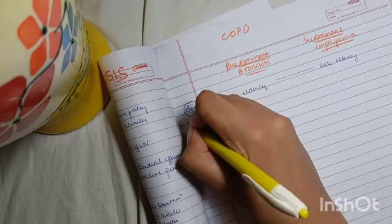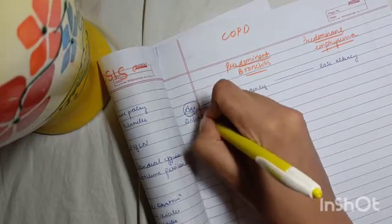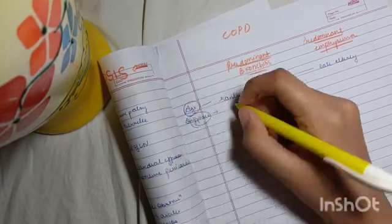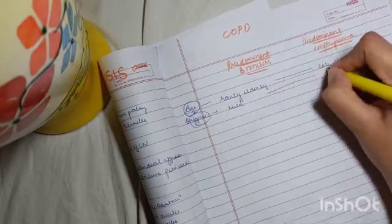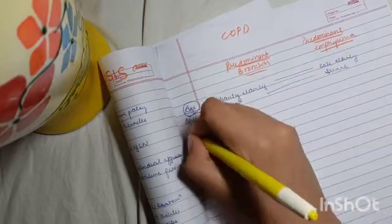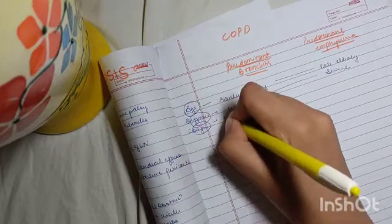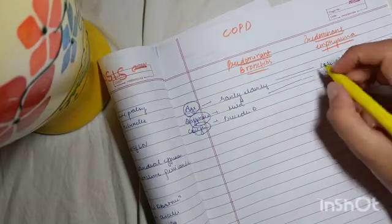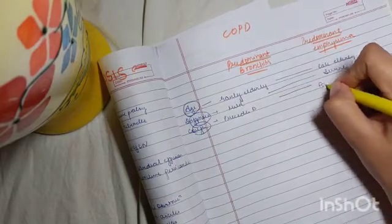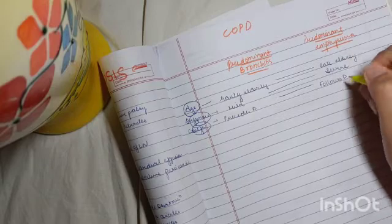Then dyspnea: it is mild in predominant bronchitis and severe in emphysema. Then cough: cough precedes dyspnea in predominant bronchitis, whereas it follows dyspnea in emphysema.